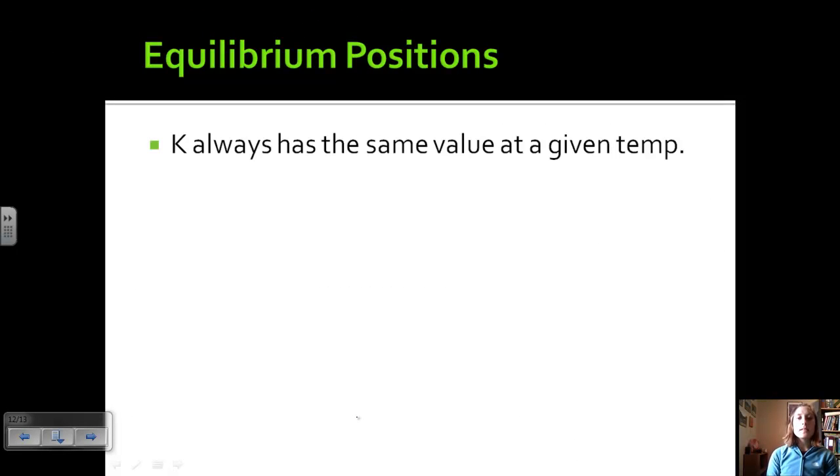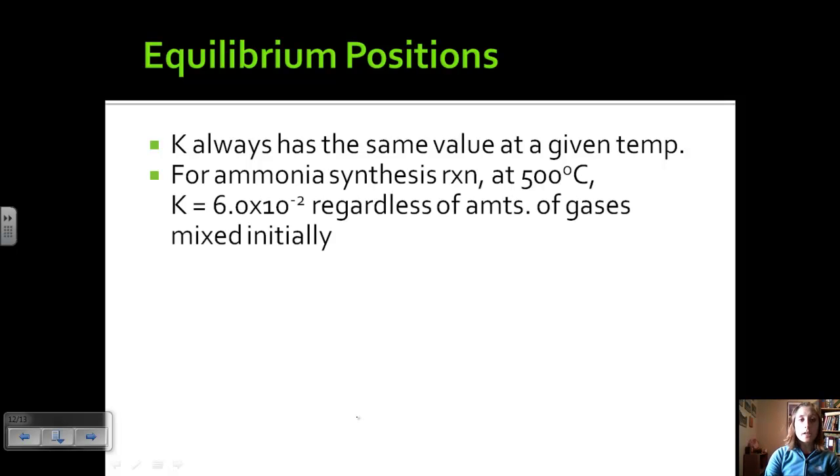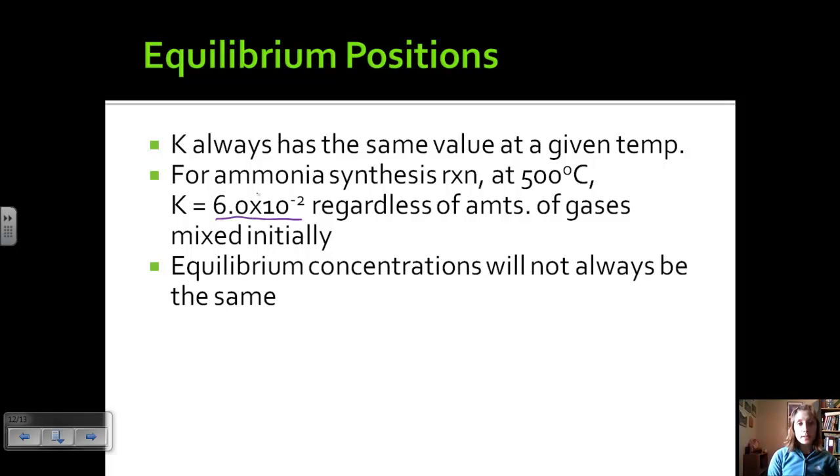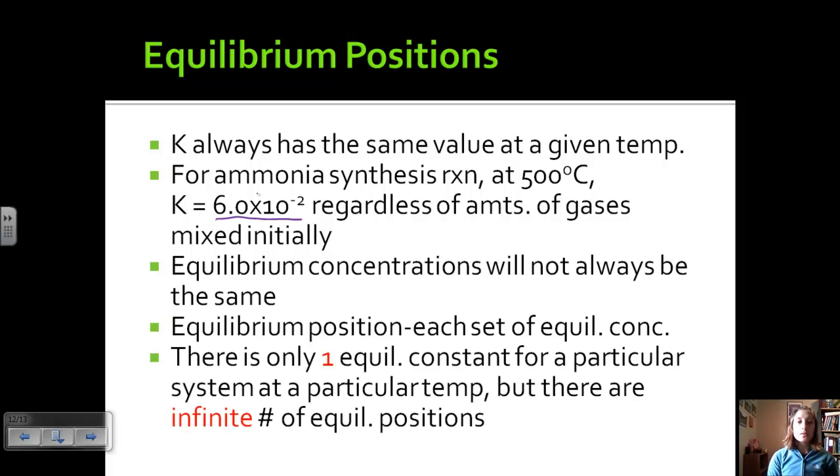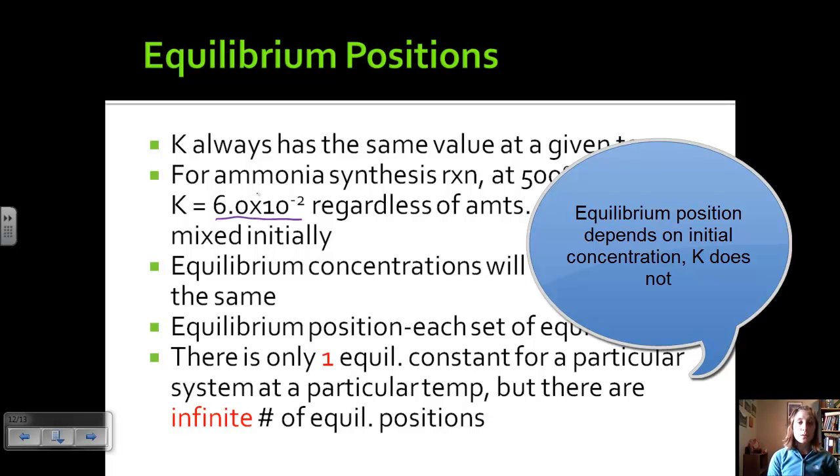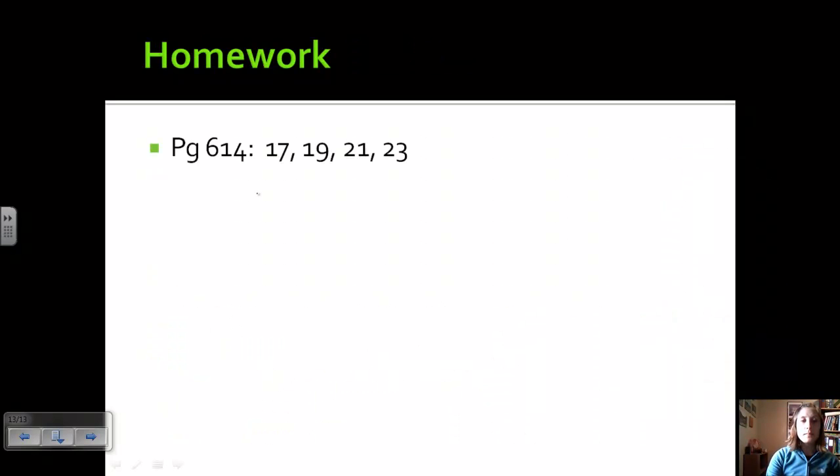Let's look a little bit more at K. K always has the same value at a given temperature, but other things can change. For that ammonia synthesis reaction that we looked at, at 500 Celsius, K is equal to 6 times 10 to the negative 2. And this is regardless of the amount of gases that are mixed initially. It does not matter how much hydrogen and nitrogen you put together. This is the equilibrium constant. So concentrations won't always be the same, but the constant will be. And having different equilibrium concentrations is an equilibrium position. So we can take different sets of equilibrium concentrations, and each one of those is called an equilibrium position. But for all of them, K is the same. So there is only one equilibrium constant at a particular temperature, but there are infinite numbers of equilibrium positions. This is very useful when we're trying to calculate different values using the same K. All right, so we will go over some examples in class. But otherwise, this is what we're going to get started on as well. Have a good day.